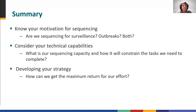In this module, we discussed motivations for sequencing SARS-CoV-2 to enhance epidemiological surveillance and investigations. We outlined technical considerations such as how much of the genome to sequence, whether sequencing the spike protein is sufficient, sample quality and CT value thresholds, and capacity for wet lab and dry lab components. Finally, we presented strategies depending on your laboratory capacity — understanding your motivation and technical capabilities will help ensure maximum return on your sequencing efforts.